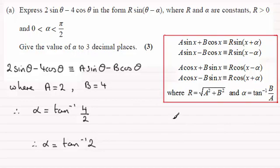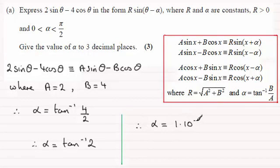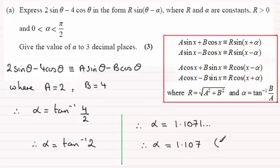If you work that out, make sure you're in radians mode on your calculator. You should find that α equals 1.1071... radians. Rounded to 3 decimal places, therefore α equals 1.107 (3 d.p.).